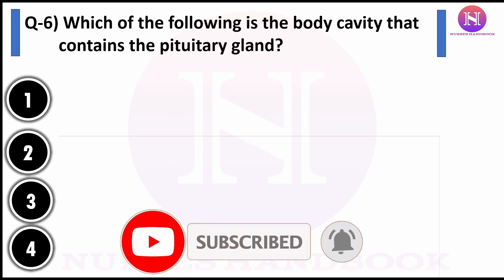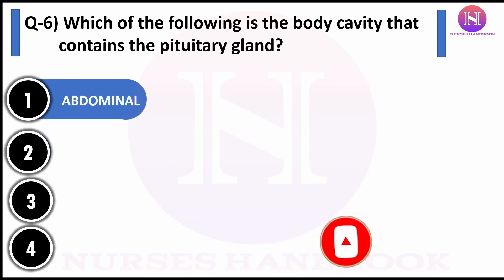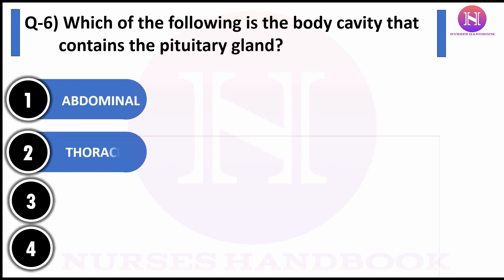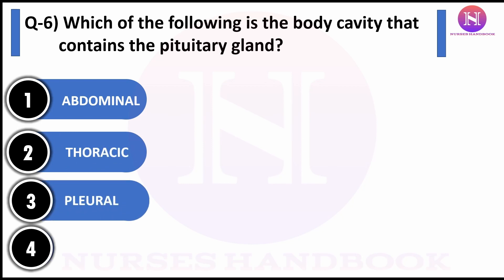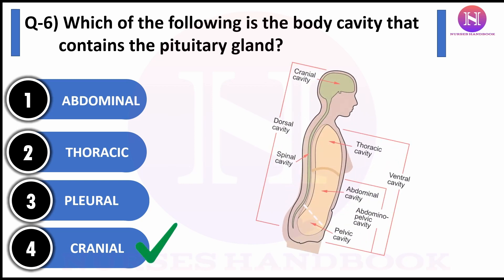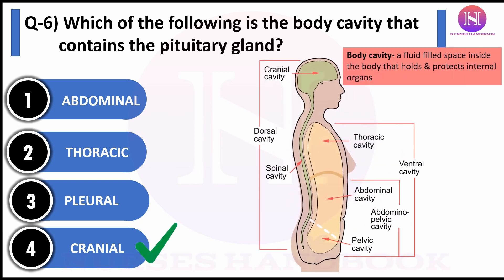Question number six: which of the following is the body cavity that contains the pituitary gland? Option one: abdominal, option two: thoracic, option three: pleural, option four: cranial. The correct answer is cranial. A body cavity is a fluid-filled space inside the body that holds and protects internal organs.